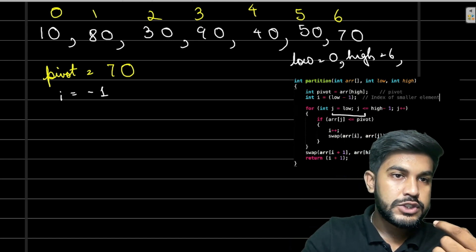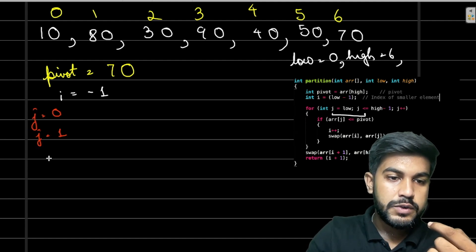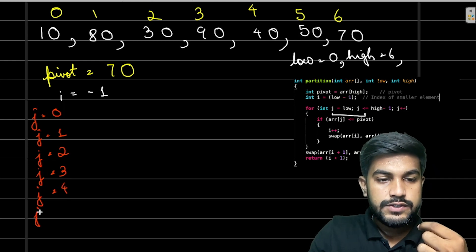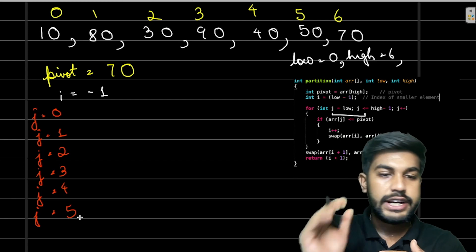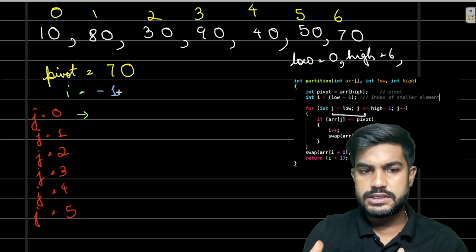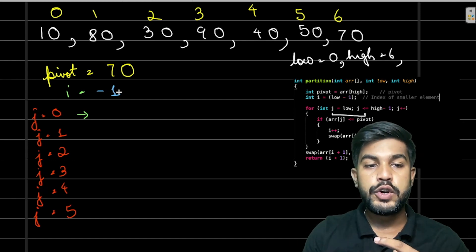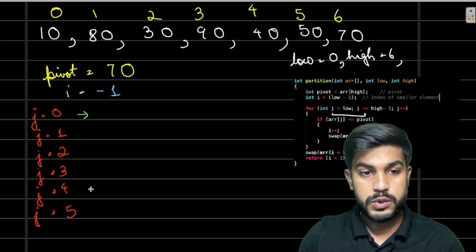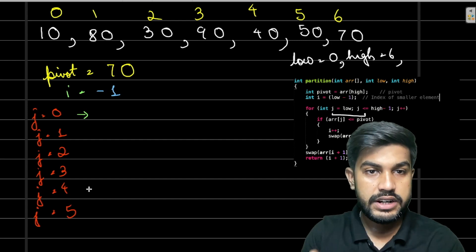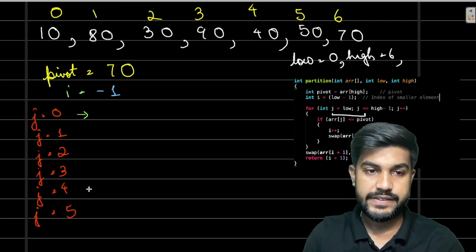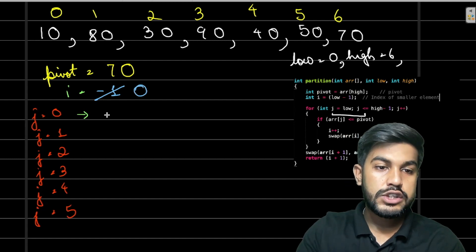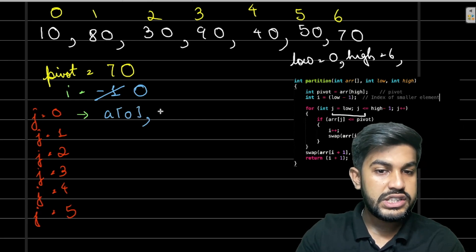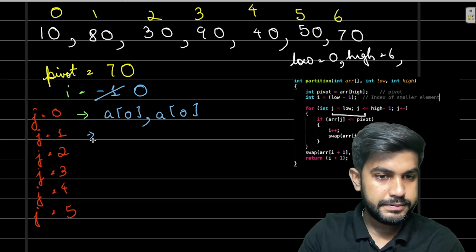For j=0: is a[0]=10 less than pivot 70? Yes. Increment i to 0, swap a[0] with a[0] — no change. For j=1: is a[1]=80 less than 70? No — we skip. For j=2: is a[2]=30 less than 70? Yes. Increment i to 1, swap a[1] and a[2] — array becomes [10, 30, 80, 90, 40, 50, 70].